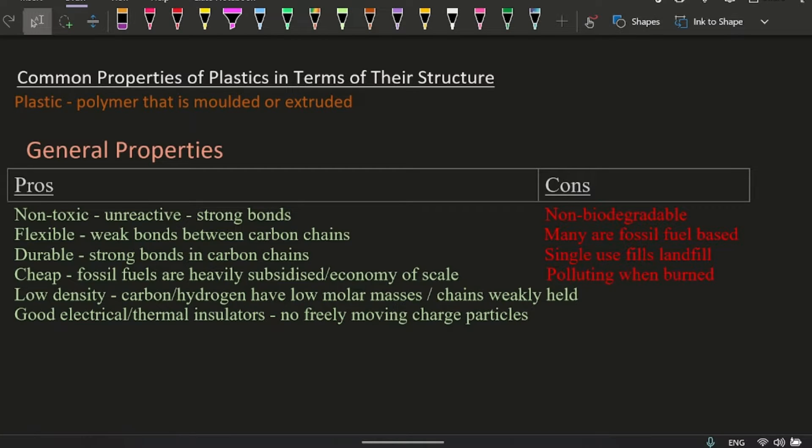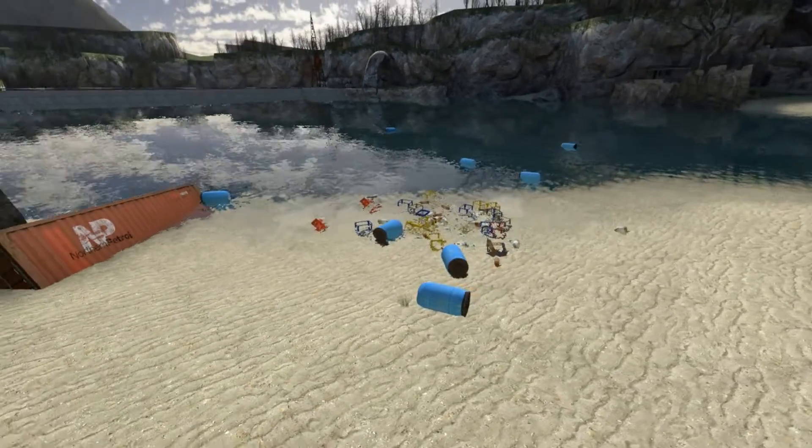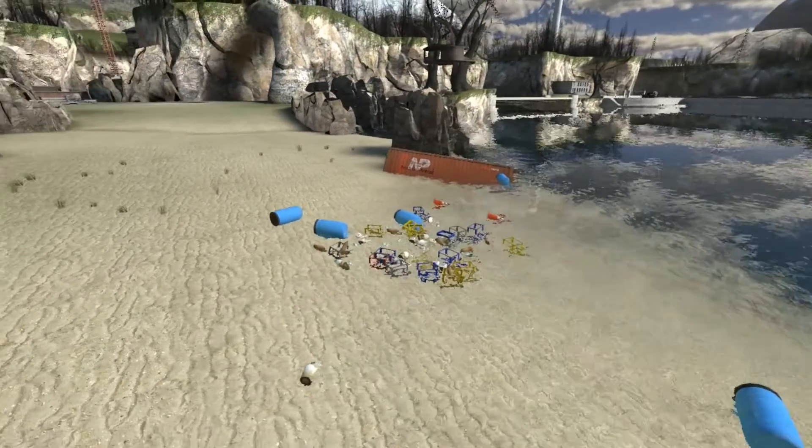Common properties of plastics in terms of their structure. What is plastic? A polymer that's molded or extruded. Looking at these general properties and the chemical reason for them. First, they're non-toxic, pretty unreactive, and have very strong bonds. But the problem is they mostly aren't biodegradable because of these strong bonds. There isn't anything in the environment that can break them down easily.